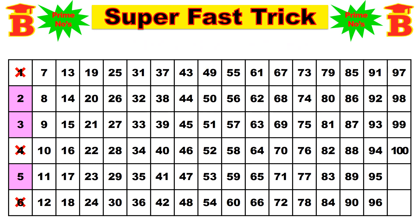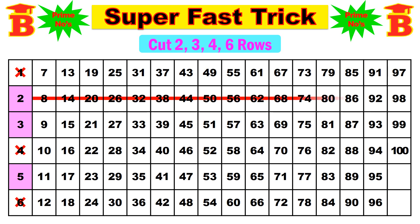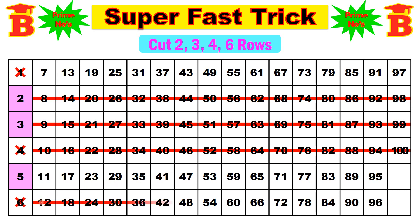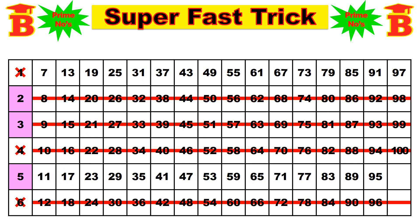Next step: cut the 2nd, 3rd, 4th, and 6th rows. Strike out the 2nd row, strike out the 3rd row, strike out the 4th row, and strike out the 6th row also. Now we have only 2 rows remaining — the 1st row and the 5th row.